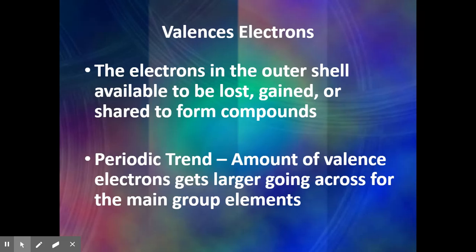Another thing we're going to look at in this section is called periodic trend. A periodic trend looks at how properties change as we move across or down the periodic table. For valence electrons, the trend is that as we move across the periodic table, the number of valence electrons gets larger.